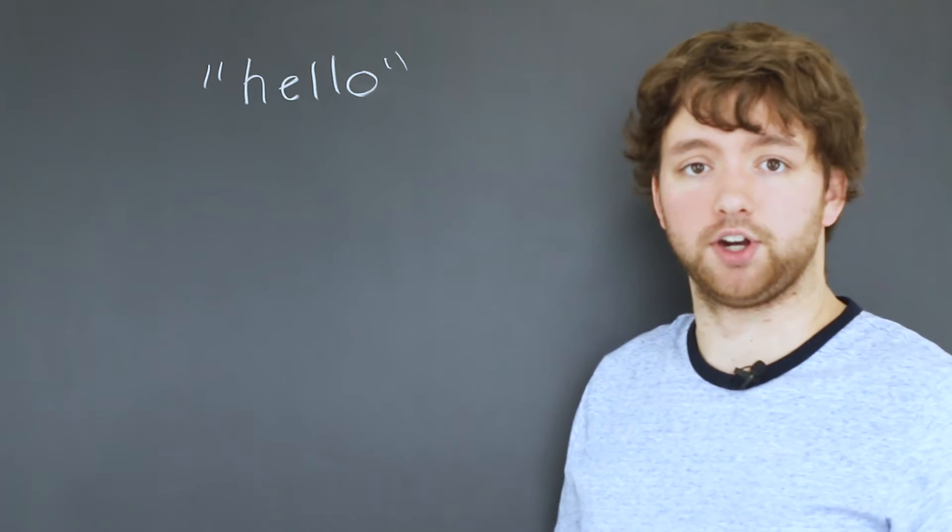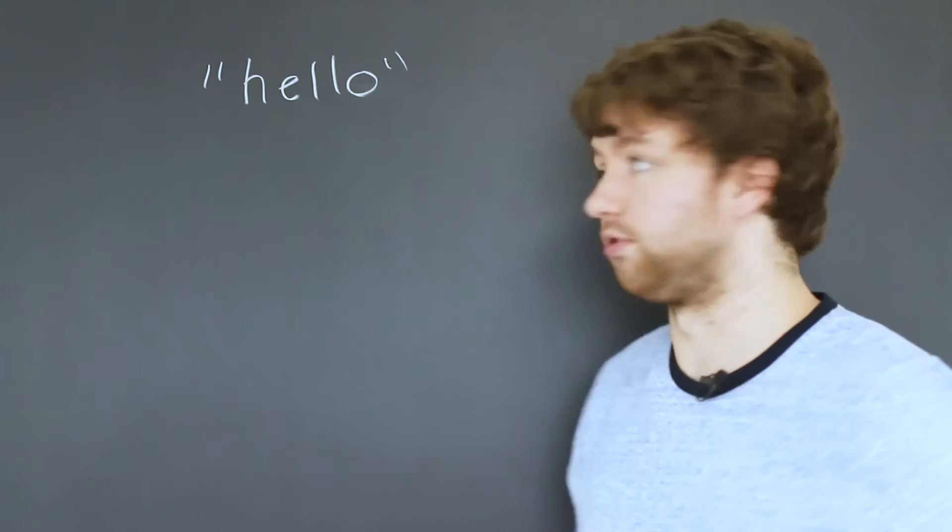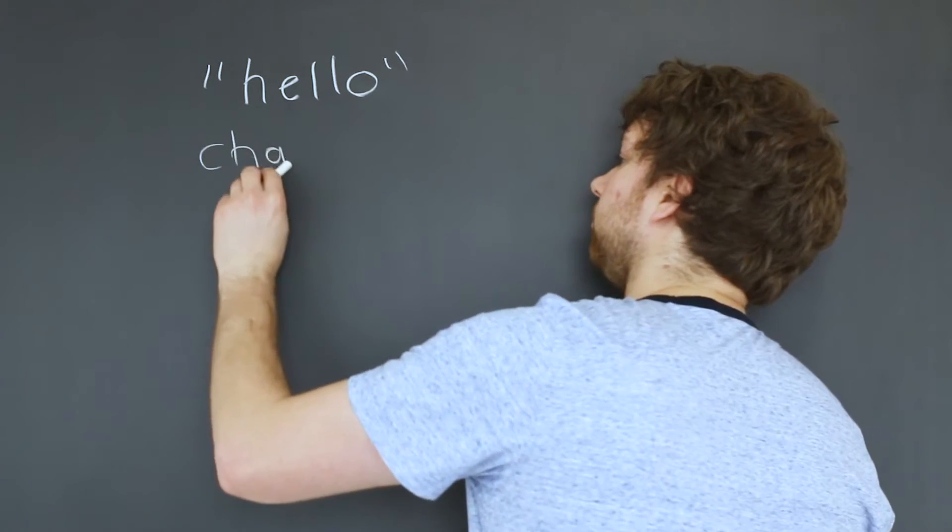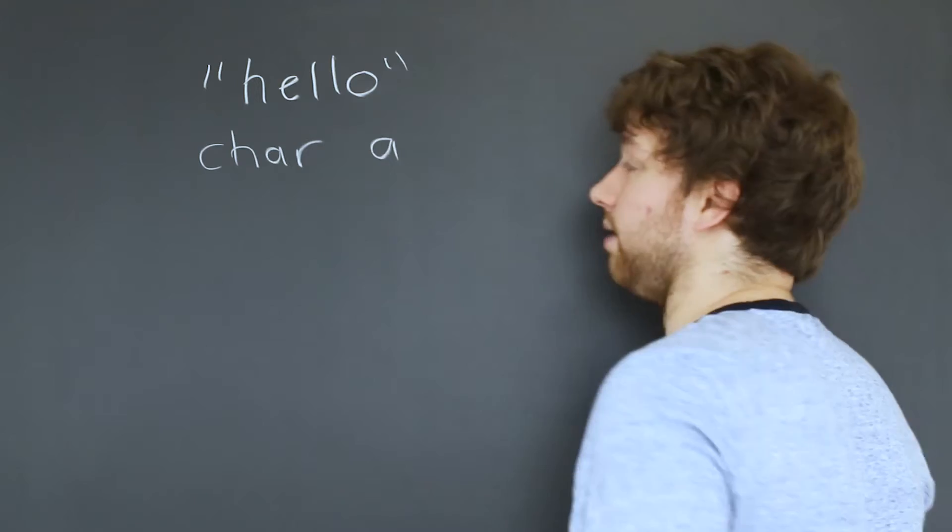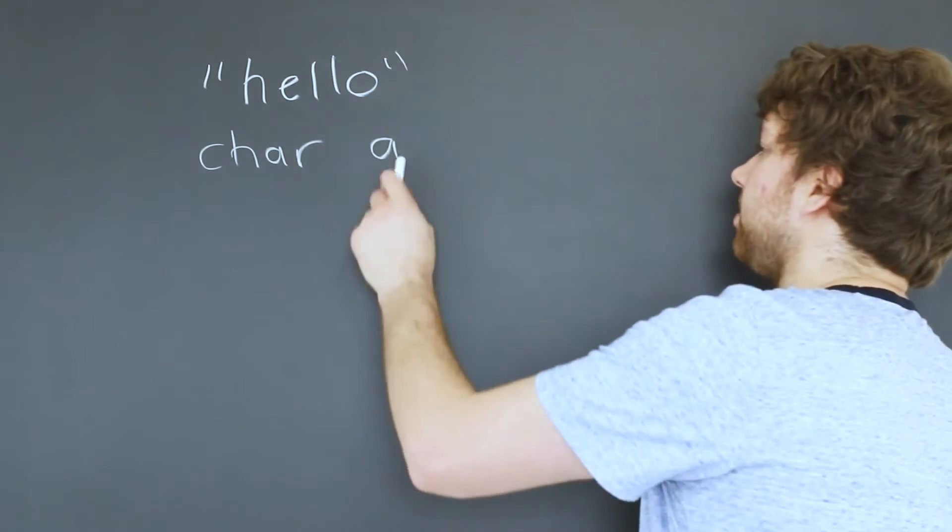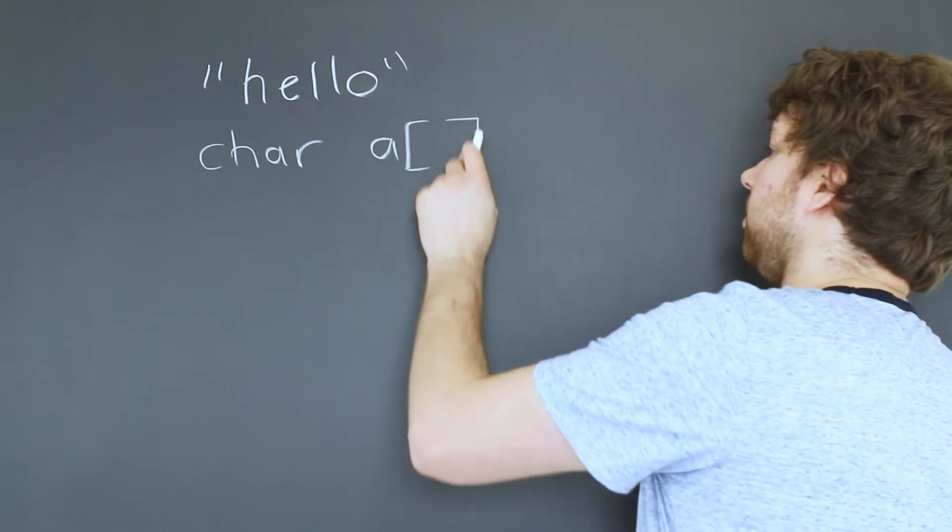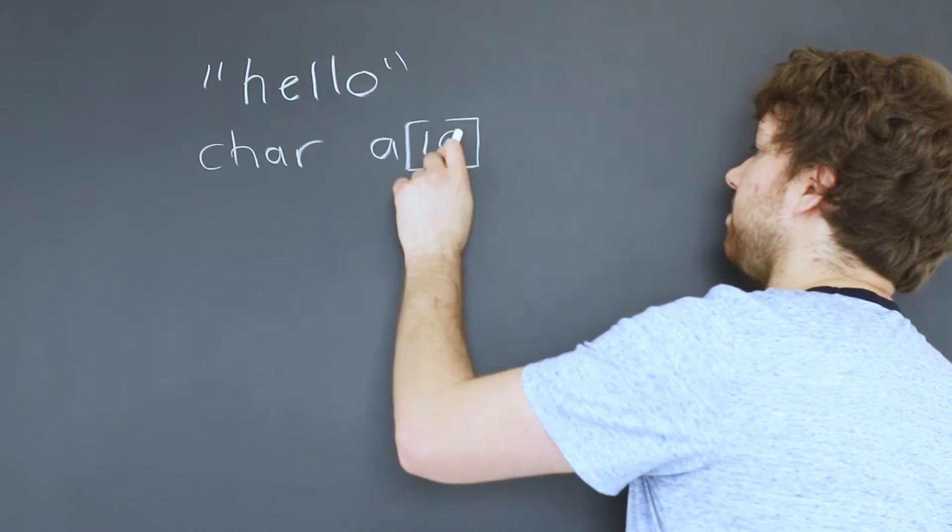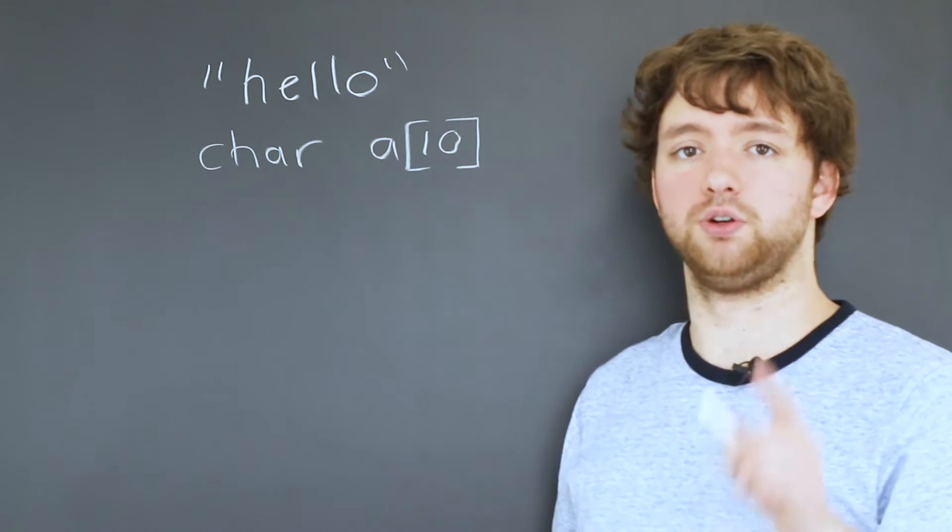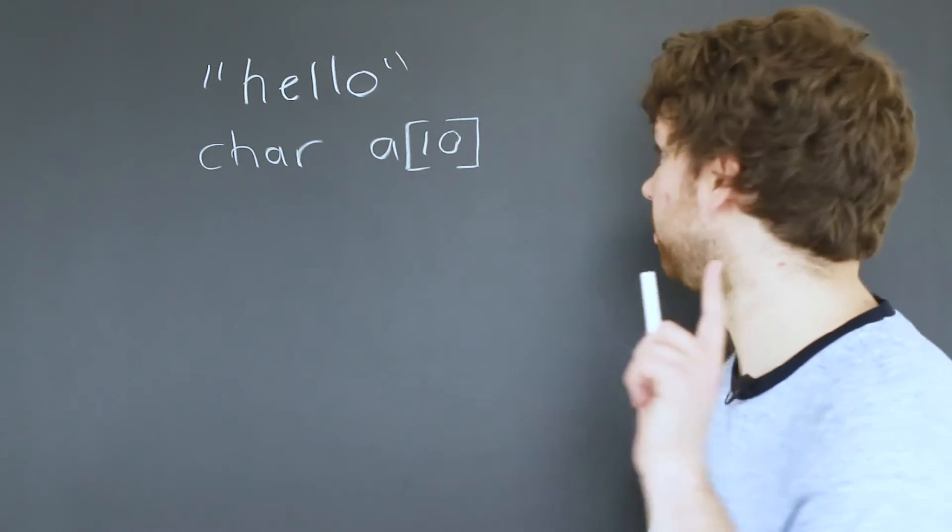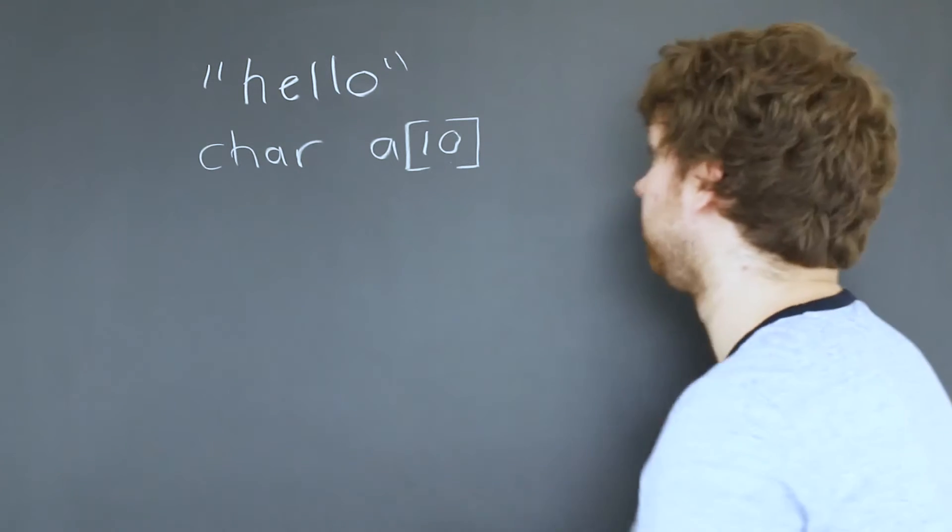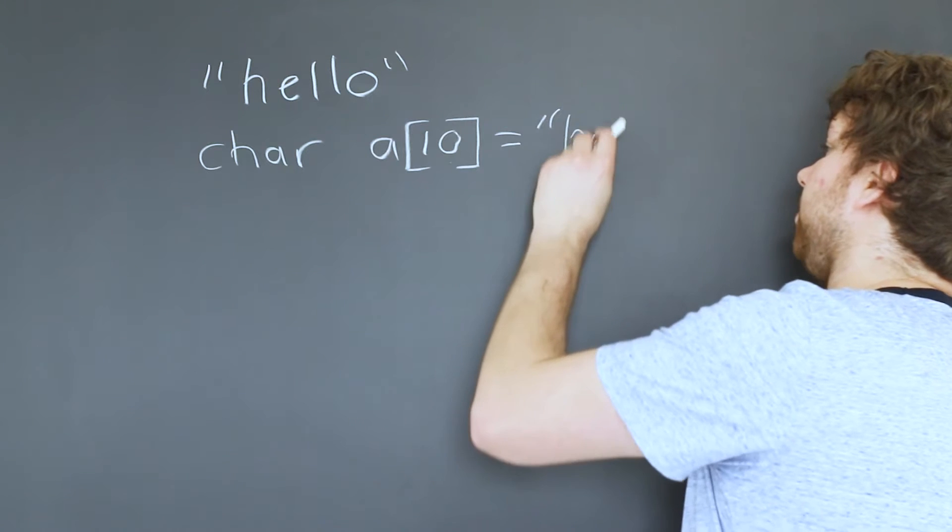If we wanted to assign this to a variable, we would need a character array. So we would have something like this. And I'm just going to name this A because, you know, creativity. Not really. And this is going to be an array. So I'm going to put the size of the array here and we're going to talk about that because that's not always the best thing to do. So just make sure you watch to the end.